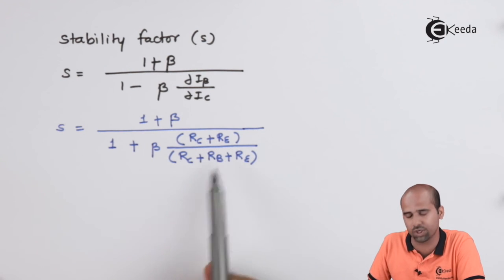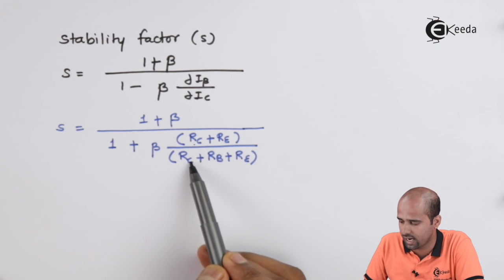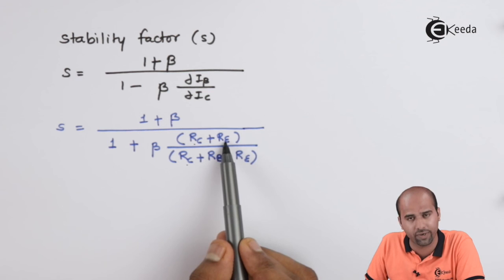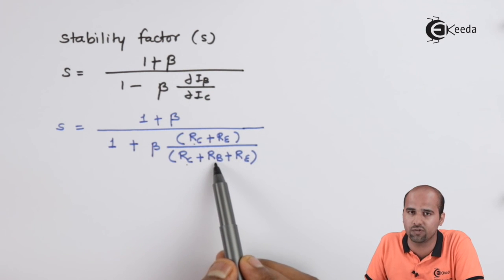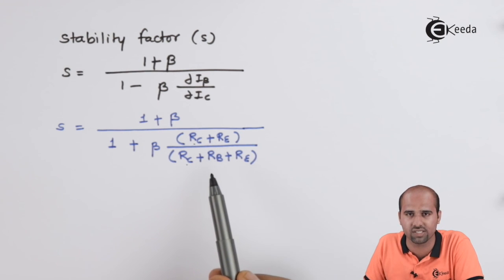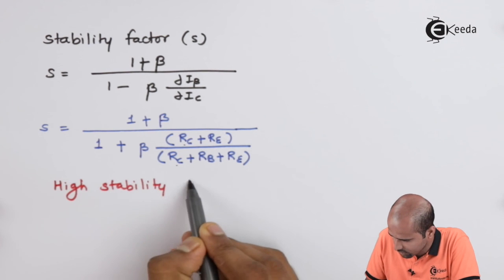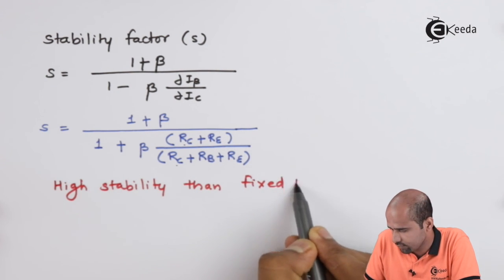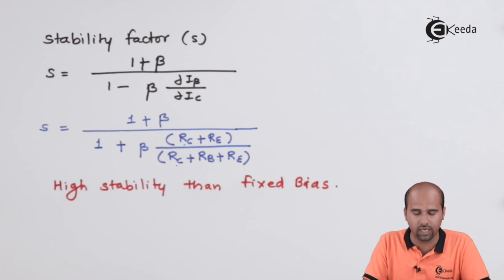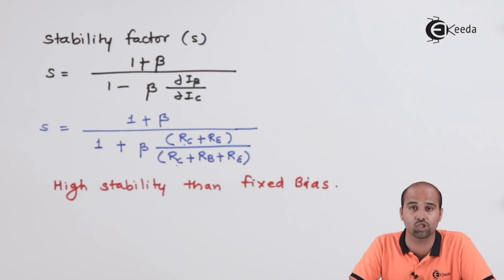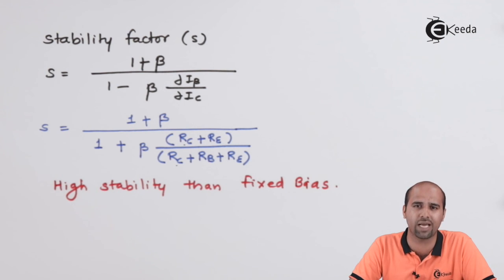This is the conclusion from the analysis of collector-to-base bias. Looking at this expression, even if no emitter resistance is placed, RC divided by (RC + RB) gives a higher stability value than the previous fixed-bias expression. So collector-to-base bias provides higher stability than fixed bias. All these formulas and equations are important for DC analysis. Stay tuned for the next video where we will learn DC analysis in depth. Thank you so much for watching — subscribe to the Ikeda channel and learn more EDC.